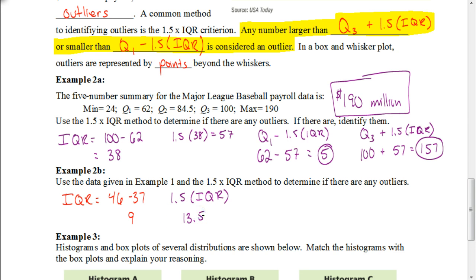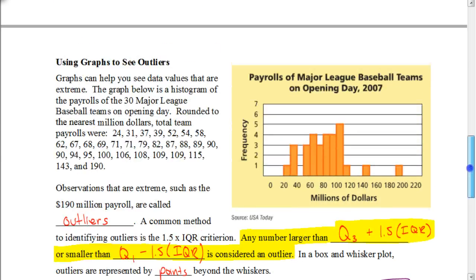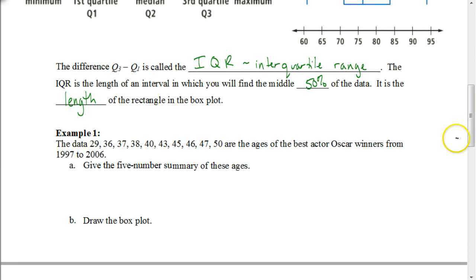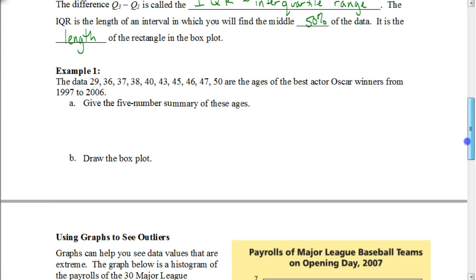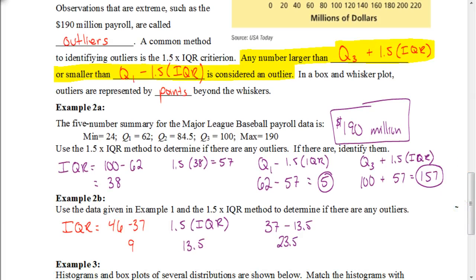Now we'll check the lower end. Our Q1 was 37, so we take 37 minus 13.5, which gives us 23.5. Looking at our data, our smallest number was 29, which is greater than 23.5, so there is no lower end outlier.